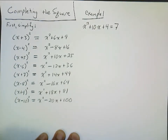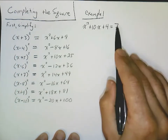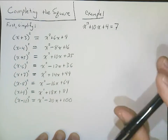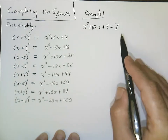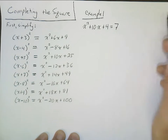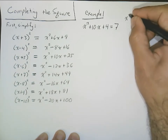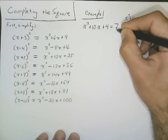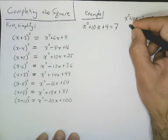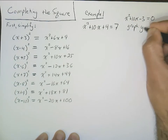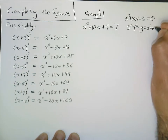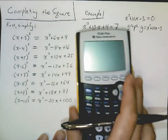Now, if you remember from solving by graphing, in order to solve by graphing we needed one side of the equation to equal 0. For completing the square, we don't need that. But if we were to solve this by graphing just to see what the solutions ought to be, we would need this to equal 0 — so this would be equivalent to x squared plus 10x minus 3 equals 0. So we would graph y equals x squared plus 10x minus 3, and we can do that in your calculator.